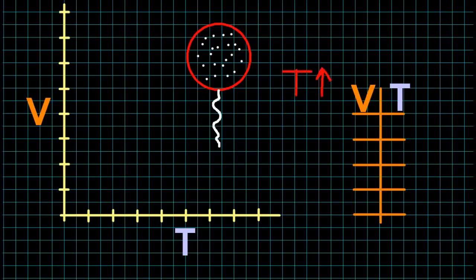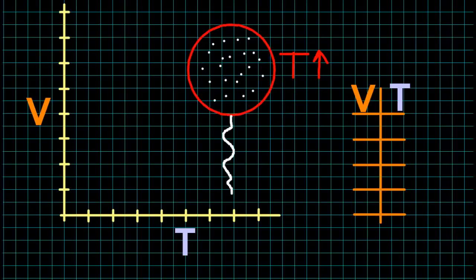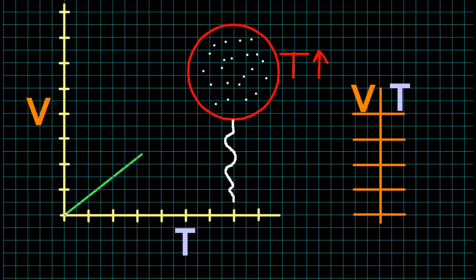Now, I want the pressure to be constant, so the only way we can fix that is to increase the volume. So there will be less collisions per unit area. So that basically means you heat a balloon up, you double the temperature, you double the volume of the balloon.